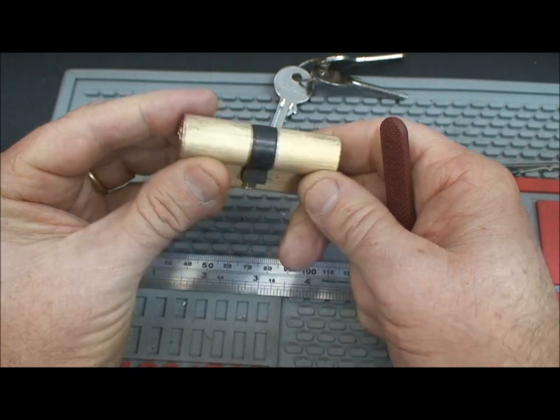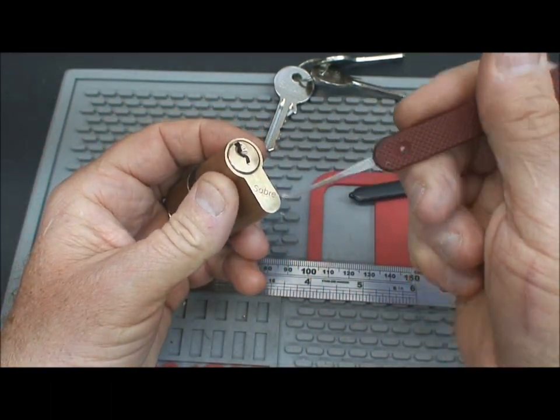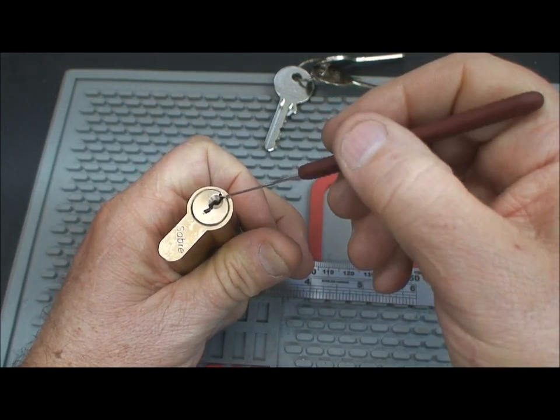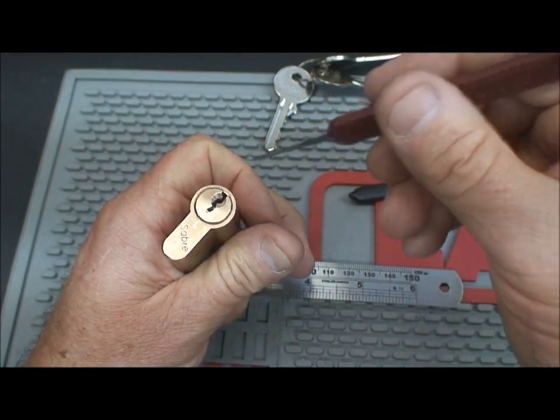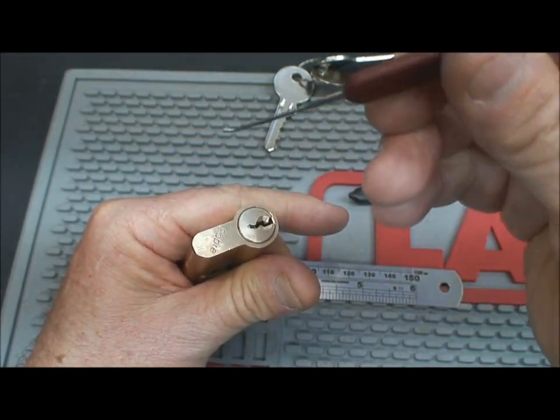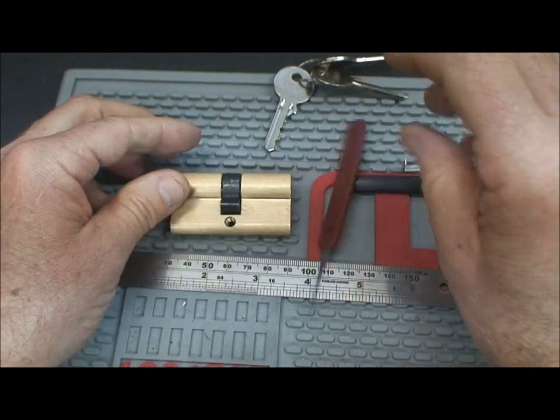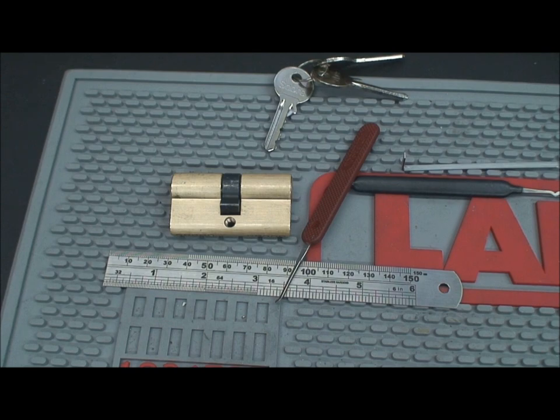When you find a lock that has, even with one or two security pins, if it feels like it's really mushy when you single-pin pick it, which would indicate that the pins are pretty old, as they are in this used lock. They've lost some of their tension. You might be able to use that zipping technique to get in very quickly, as you saw. Anyway, thanks for your time, and everybody be safe, and stay legal.